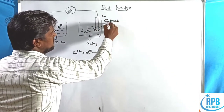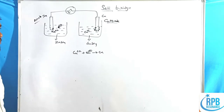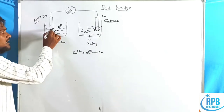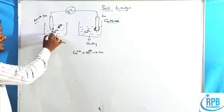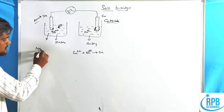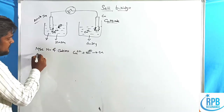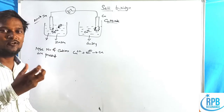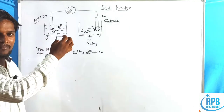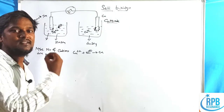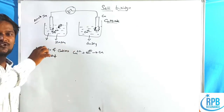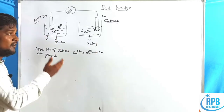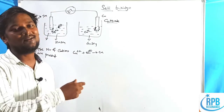The Cu²⁺ ions in the copper sulfate solution gain two electrons and form copper metal, which is deposited at the cathode. Deposition takes place at the cathode, and liberation takes place at the anode. However, as zinc releases electrons, more cations accumulate in the left compartment. These positive cations attract the flowing electrons, which somewhat prevents and reduces the electron flow — this is the first problem with the anodic half-cell.